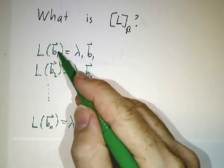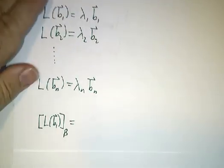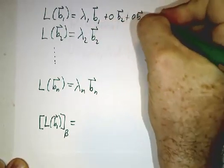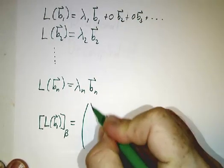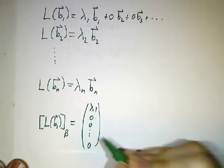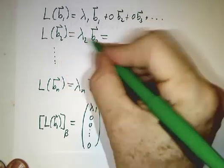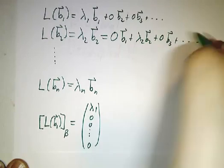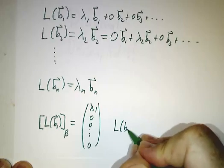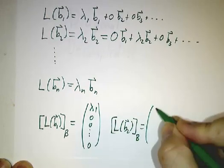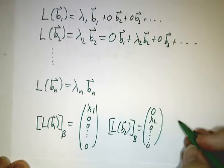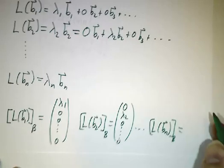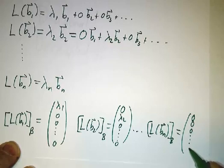The next step is to figure out what the coordinates of all of these are. So L of B_1 is λ_1 B_1 plus 0 B_2 plus 0 B_3 and so on. So the coordinates of L of B_1 are λ_1, 0, 0, 0. And L of B_2 can be thought of as 0 B_1 plus λ_2 B_2 plus 0 B_3 and so on. So the coordinates of L of B_2 are 0, λ_2, 0, and so on. And you keep going. And the coordinates of L of B_n in the B basis are just gonna be 0, 0, 0, and then λ_n.